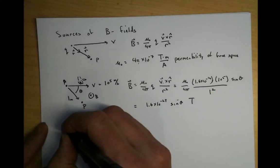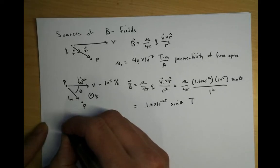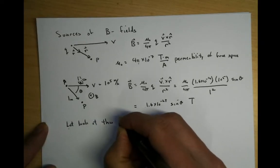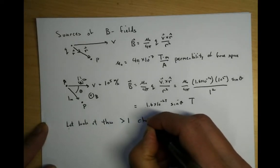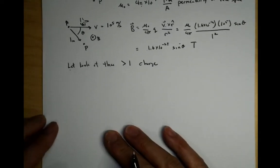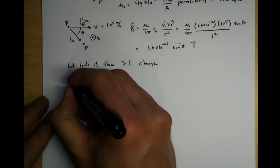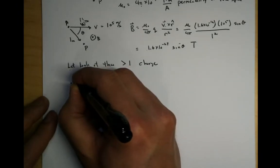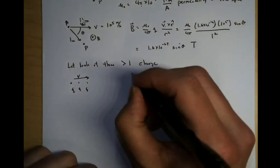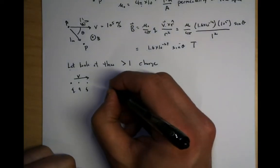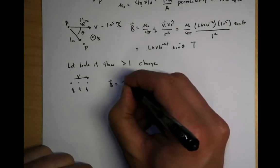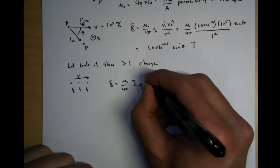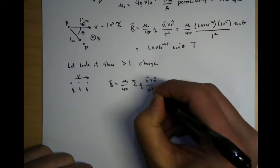Usually we care about more than one charge, so let's look at this for more than one charge. If I have a number of charges, each one a charge q, moving with velocity v in some direction, it's relatively easy — this thing can just be summed up. B is equal to mu 0 over 4 pi times the sum of q v cross r hat over r squared.